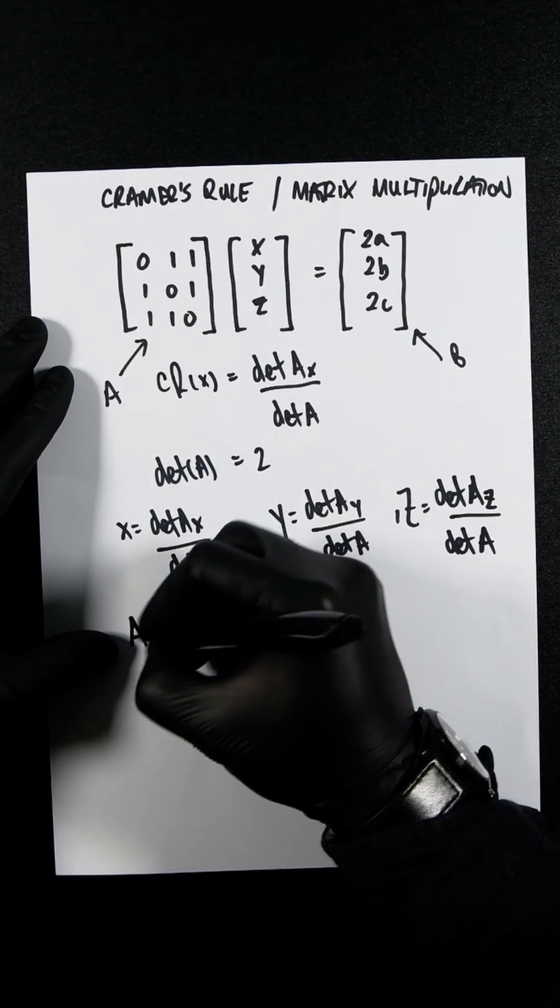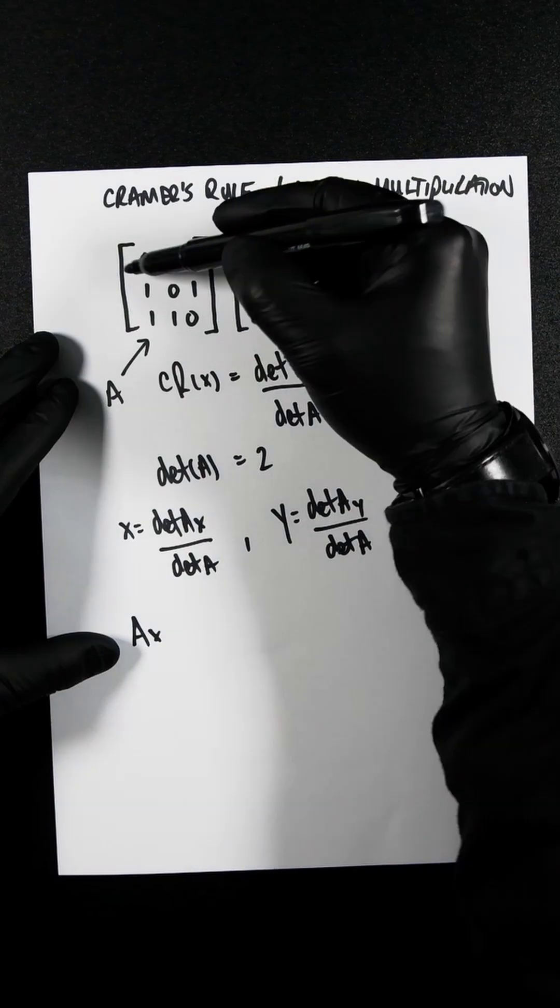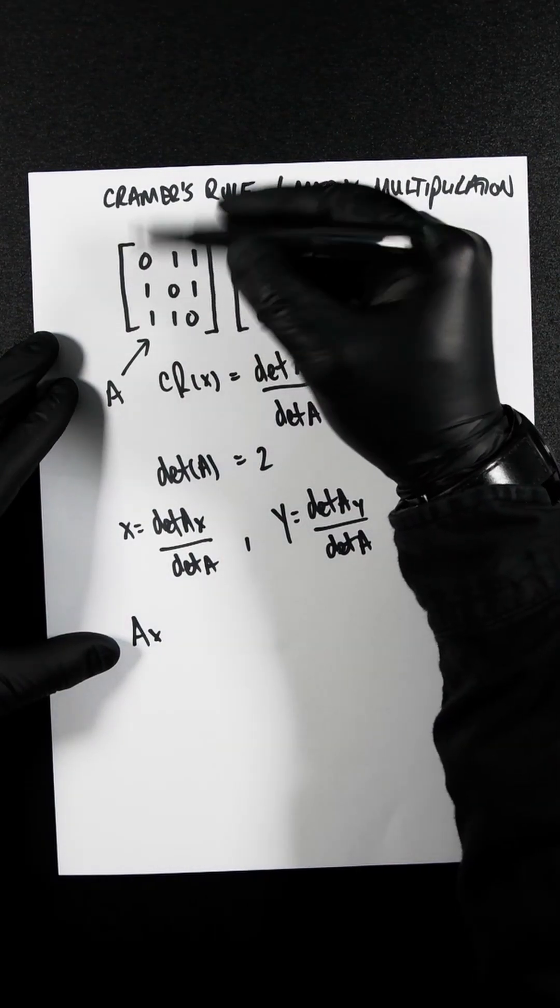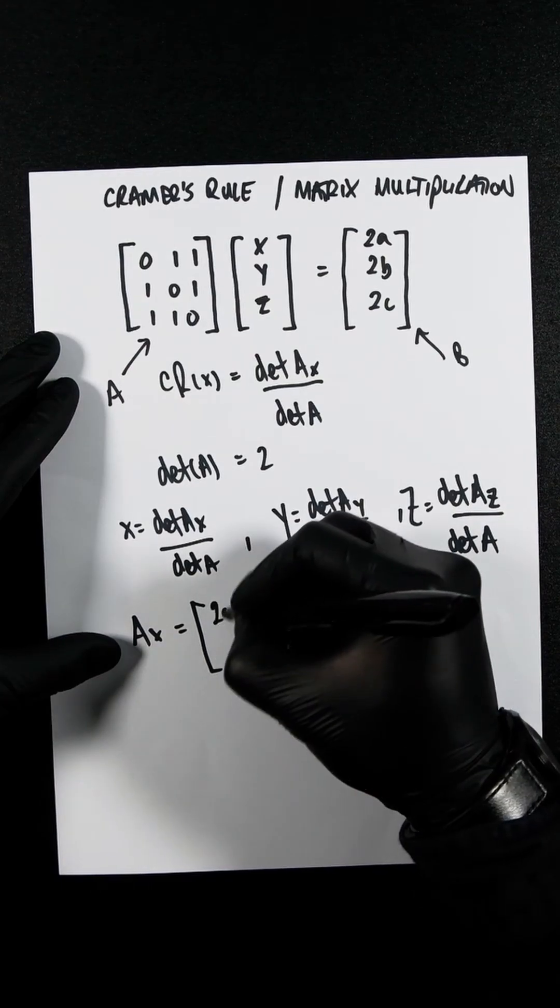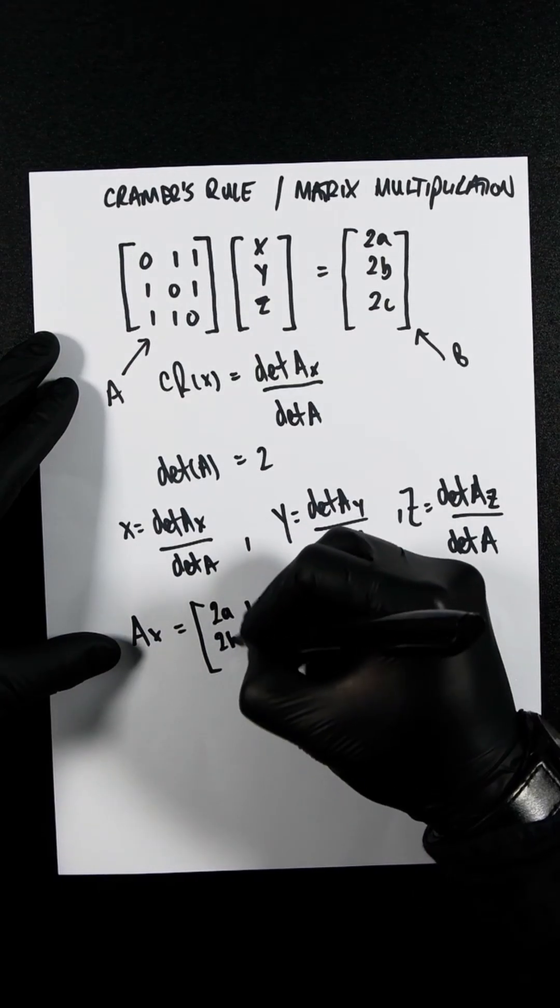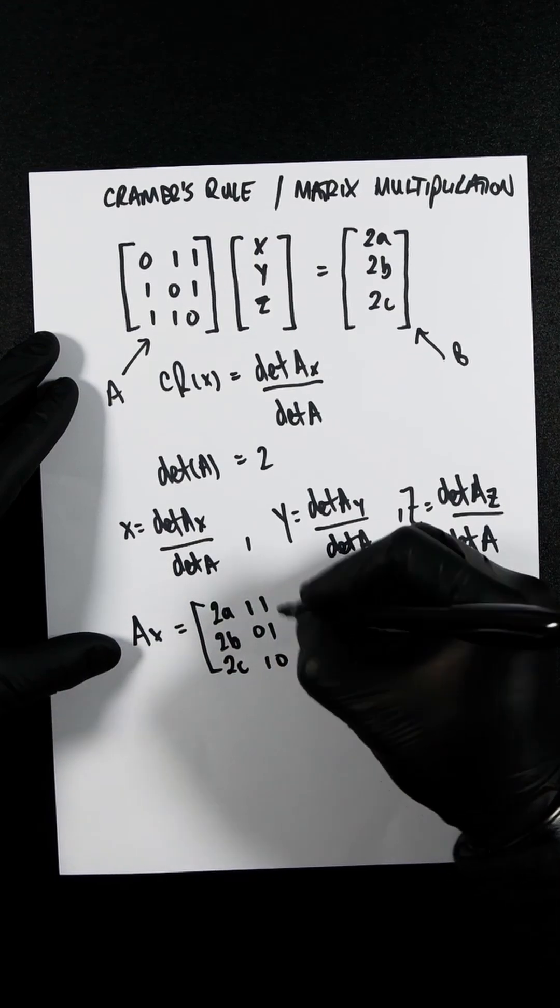So Ax would be you take B and you replace the first column. So you're going to have determinant of x, which is 2A, 1, 1, 2B, 0, 1, 2C, 1, 0.